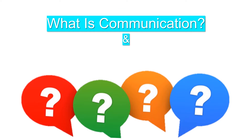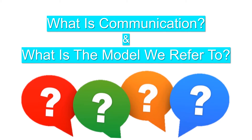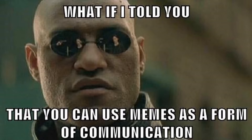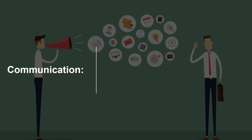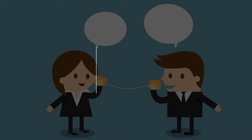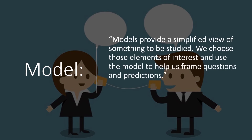What is communication and what is the model we refer to? Communication is a two-way process of reaching mutual understanding in which participants not only exchange ideas, feelings, and information, but also create and share meaning. Models provide a simplified view of something to be studied. We choose those elements of interest and use the model to help us frame questions and predictions.